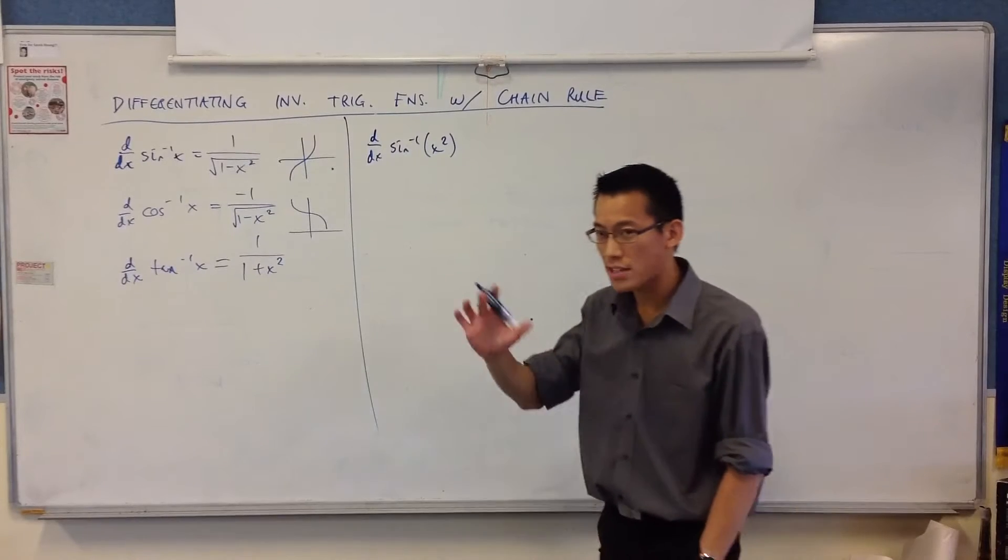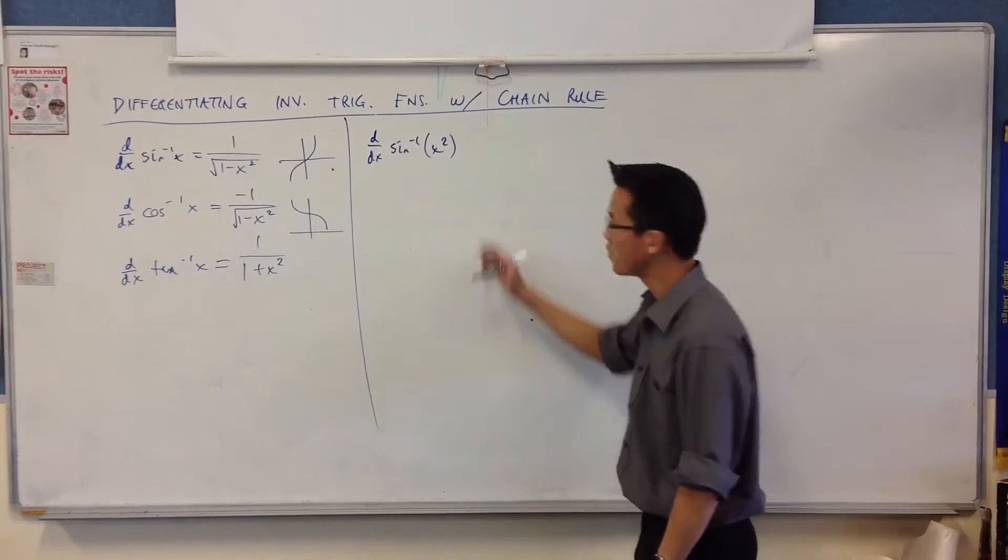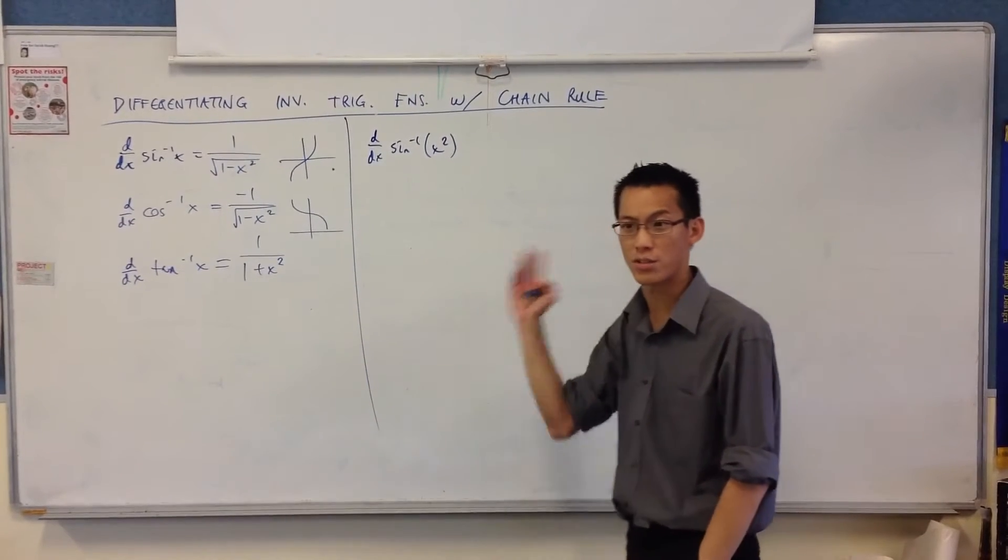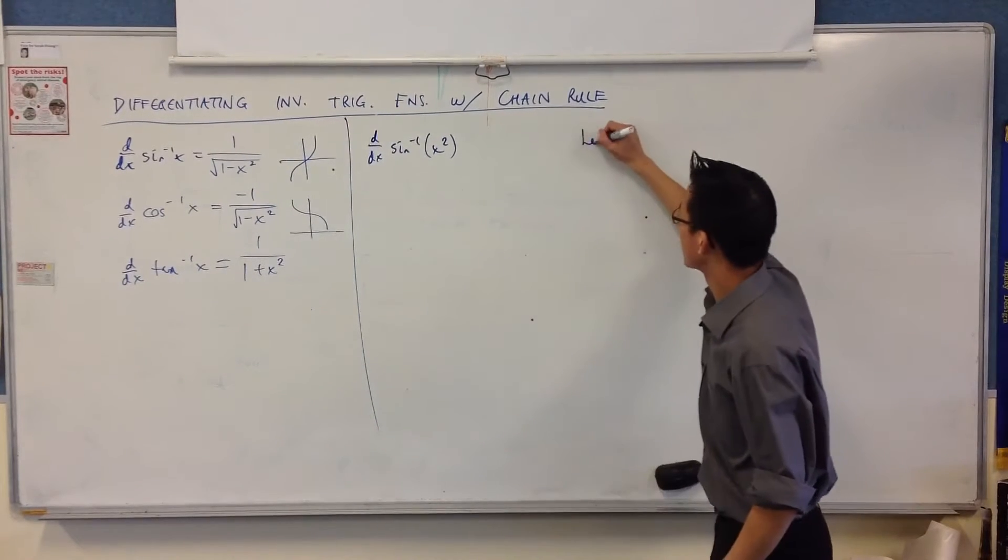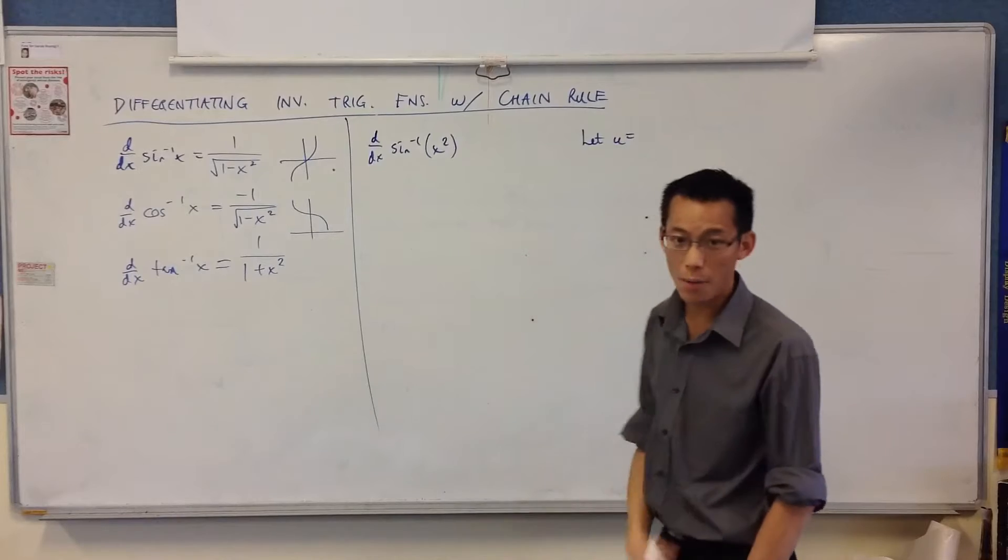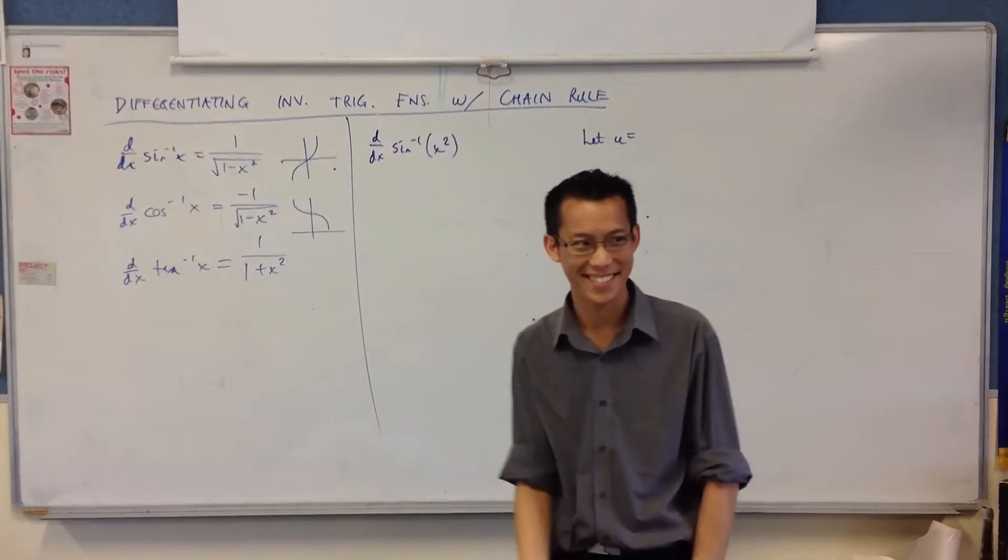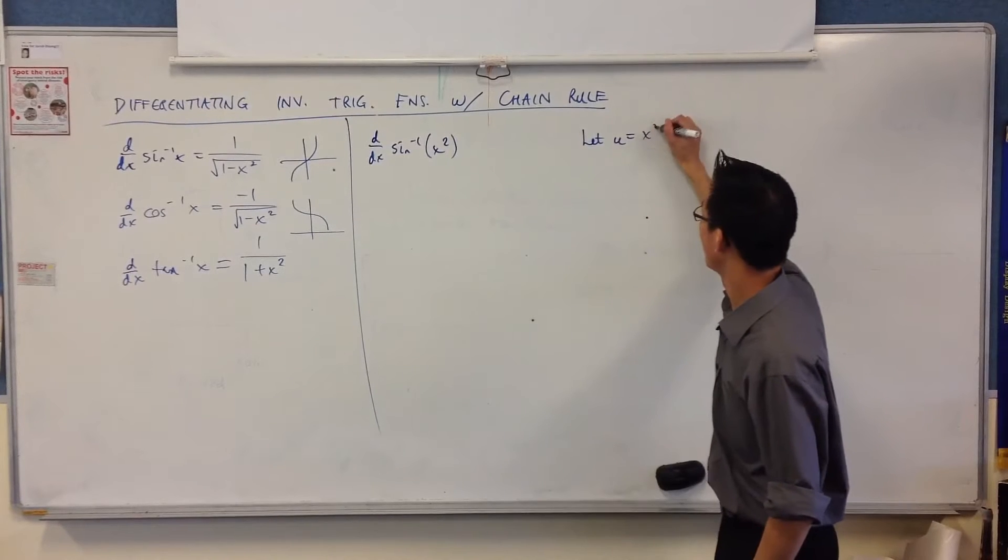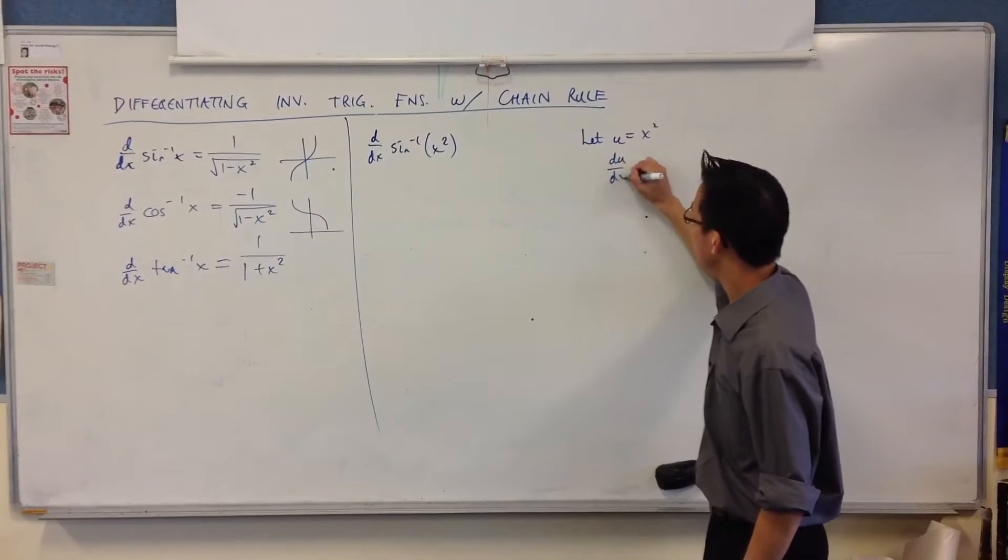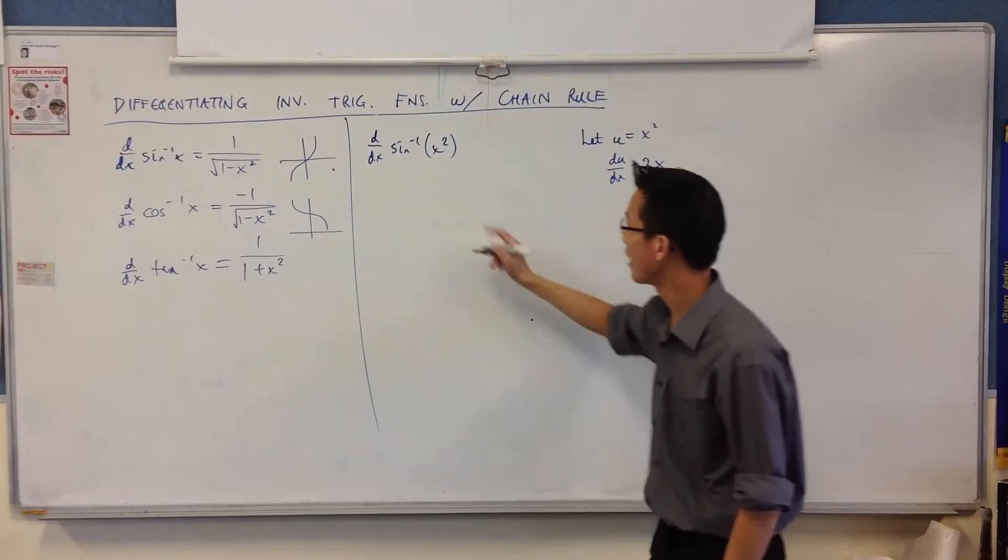Now, you guys are so familiar now with chain rule that probably you could start doing this straight away and you wouldn't need to do the substitution. But just for the sake of it, just be careful, let's go ahead and introduce a new function, right? So what would you pick? Just x squared, right? The inside function. So over here, you get this derivative. So there's one.